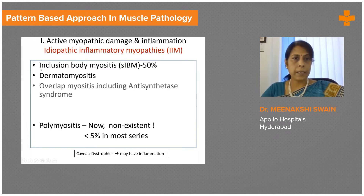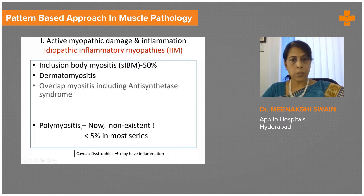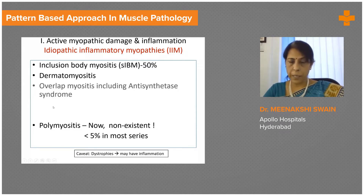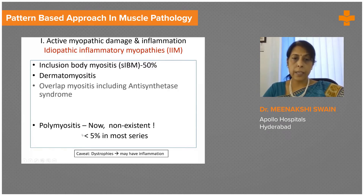The main entities here would be inclusion body myositis, dermatomyositis, and overlap myositis. A word of caution: polymyositis, which was a common condition maybe a decade ago, is now almost non-existent because most of this category has been reclassified into each of these based on new diagnostic criteria laid down by muscle groups worldwide. If the criteria are applied strictly, then less than 5% would actually fall into the true polymyositis group.